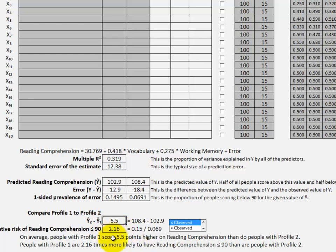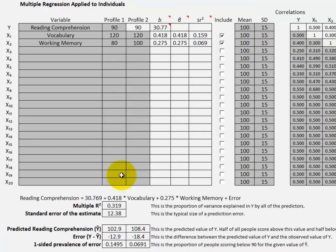The risk of scoring 90 or lower is over 2 times higher with profile 1 compared to profile 2. That is, even though people with neither profile are likely to score 90 or lower on reading comprehension, it is more than twice as likely for people with profile 1 with the working memory weakness than for people with profile 2 without the working memory weakness.